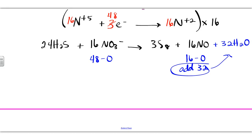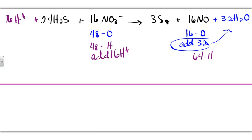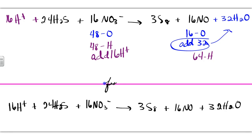Now we check hydrogens. On the right we have sixty-four hydrogens (from 32 waters); on the left we have forty-eight. We need to add sixteen more hydrogens on the left, so we add plus sixteen H⁺. This gives us our final answer.